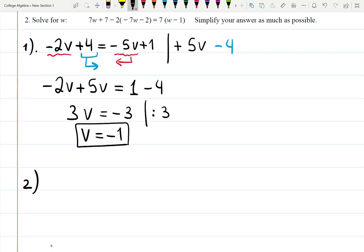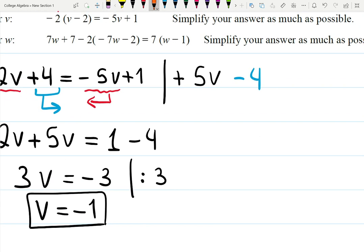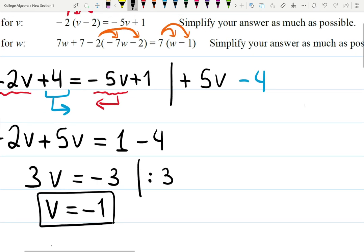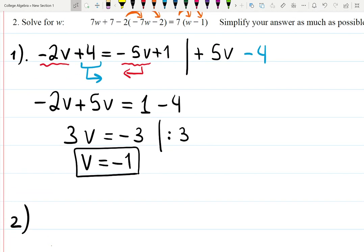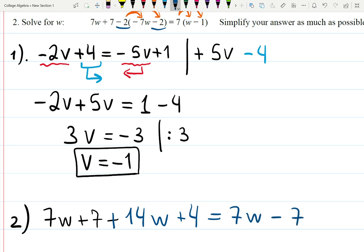For problem number 2, I'm looking at 7w+7-2(-7w-2) = 7(w-1). I will distribute carefully this -2 and multiply by -7w and then multiply by -2. The first two terms, I will just keep them as is. It's going to be 7w+7 minus, and then the distribution starts. -2 times -7w is +14w, because 2 times 7 is 14, minus times minus gives you plus. -2 times -2 gives you +4, equals 7 times w is 7w, 7 times -1 is -7.